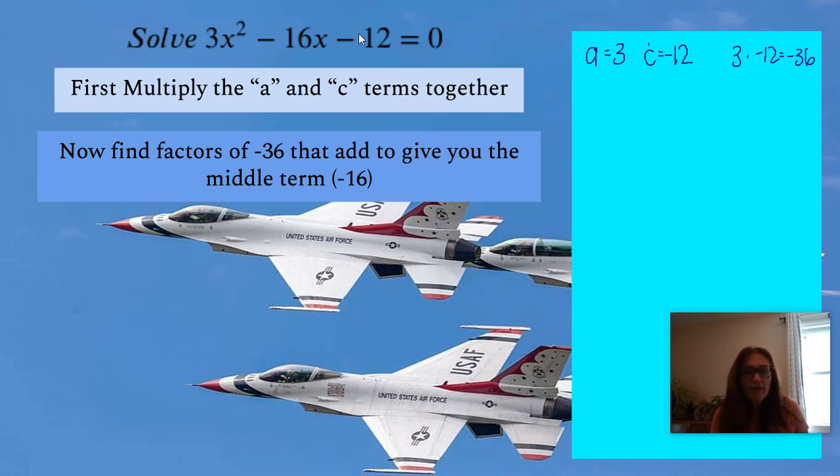So we want to be aware of the type of signs we're looking at in this problem. So we know that this last term here is negative 12. So numbers are multiplying to give us negative 12. It must mean that the signs are different. One is positive and one is negative. And then this will give us a clue. We look at this sign and we know that the sign of the larger number is going to be negative.